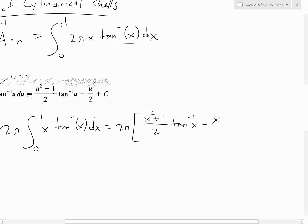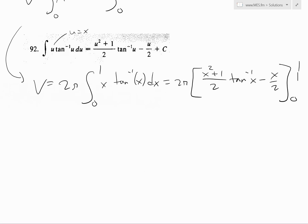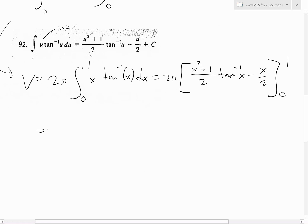Now we can plug those inside. We get 2π times [(1 + 1)/2 × tan⁻¹(1) - 1/2] minus [(1/2 × tan⁻¹(0) - 0)].